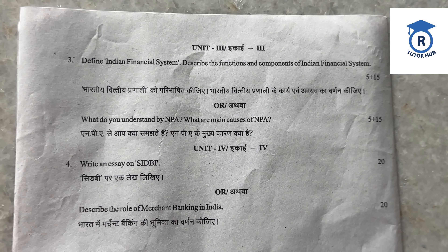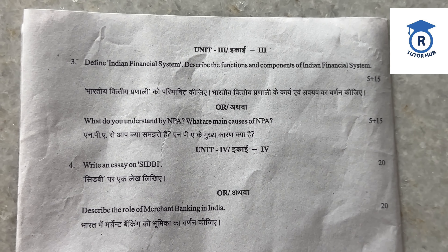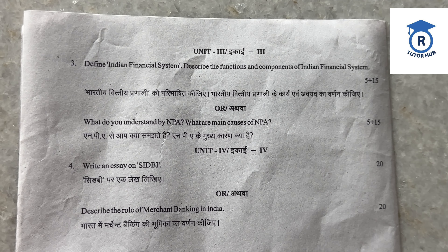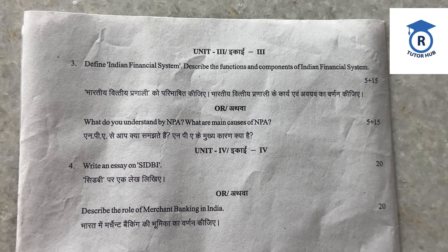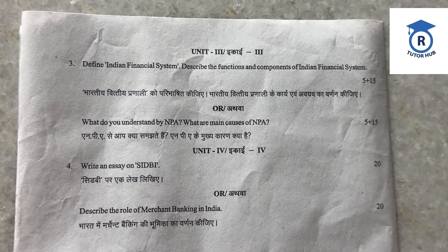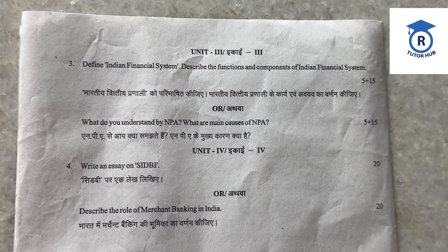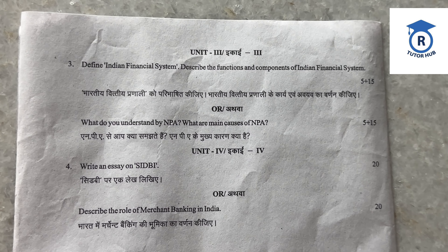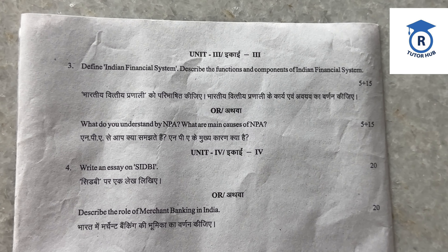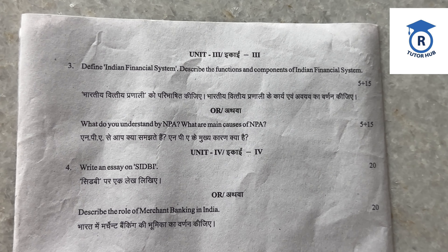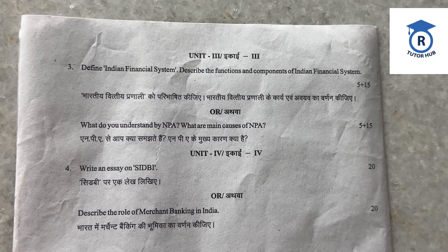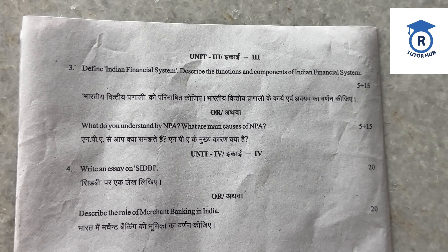Unit 3: Define Indian financial system and describe its functions and components — Bharatiya vittiya pranali ko paribhashit kijiye, Bharatiya vittiya pranali ke karya evam avayavon ka varnan kijiye. 5 + 15 marks. Option: What do you understand by NPA? What are the main causes of NPA? — NPA se aap kya samajhte hain? NPA ke mukhya karan kya hain?